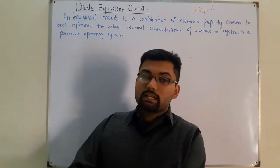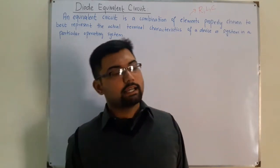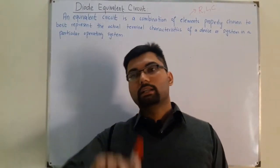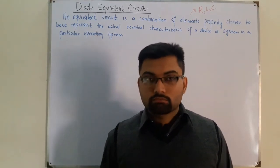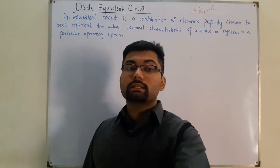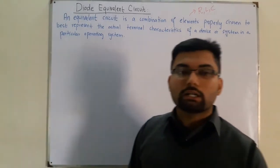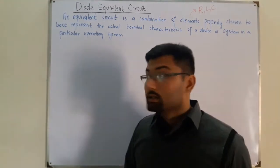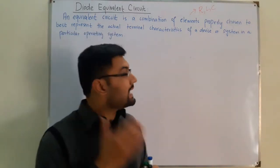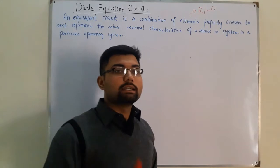Why do we need equivalent circuits? Because if we have a diode, we cannot apply basic electrical properties to it in a circuit — for example, Kirchhoff's Voltage Law, Kirchhoff's Current Law, Norton's theorem, or Thevenin's theorem. To apply these basic electrical laws, we replace the actual element by a combination of basic electrical elements R, L, or C.